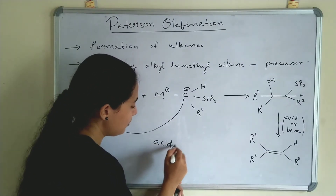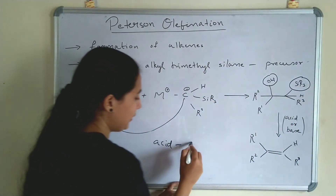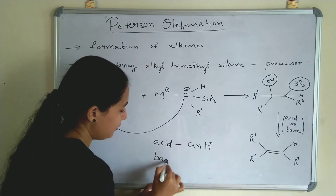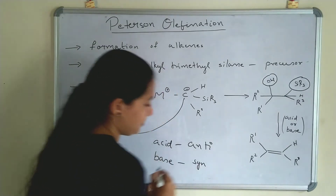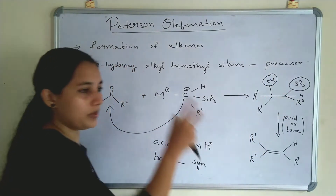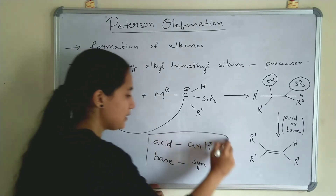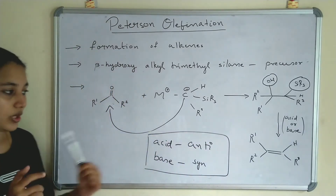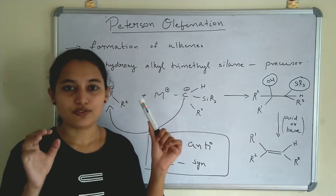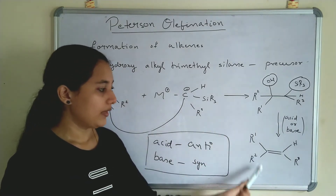Now an important point: when we are adding acid, the elimination of OH and SiR3 should be in anti-position. OH and SiR3 should be in anti-position. When we are adding base, the elimination should be in the same (syn) position. Through elimination we get a double bond. So OH and SiR3 should be in anti-position when adding acid and in syn-position when adding base. This is the important rule for Peterson Olefination. The stereochemistry of the alkene depends upon whether acid or base is used.